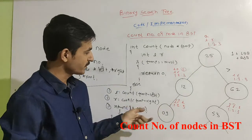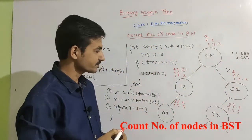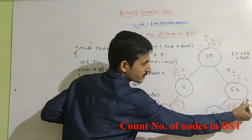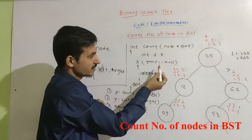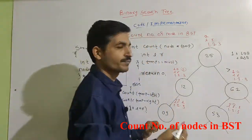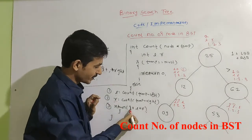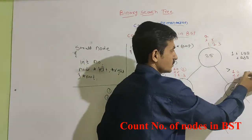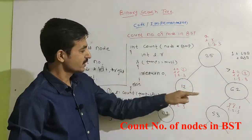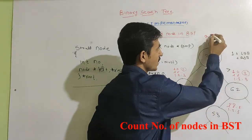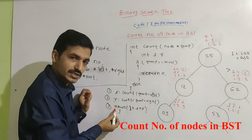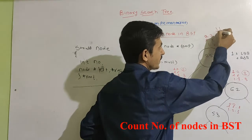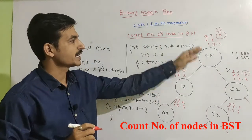The result is stored into L again because we are executing in the left side branch. Then R executes: R equals count(temp->right). It goes to temp->right; the function is called, temp is null, so it returns 0. R is 0. Then line 3: return 1 plus L plus R equals 1 plus 0 plus 1 equals 2. The whole result 2 is stored into R because we are executing in the right side branch. Now both L and R are executed, so line 3 returns: 1 plus L plus R equals 1 plus 2 plus 2 equals 5. In this way there are 5 nodes in this binary search tree.